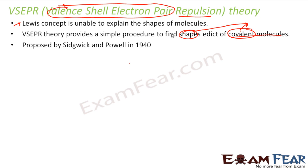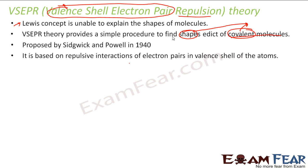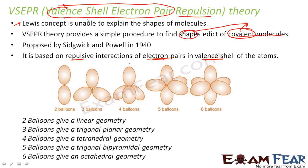This theory was proposed in 1940, and it is based on the repulsive interaction of electron pairs in the valence shell. The key words are: electron pairs in the valence shell and repulsion. So we have valence shell electron pairs that repel — that is what gives this theory its name: valence shell electron pair repulsion.